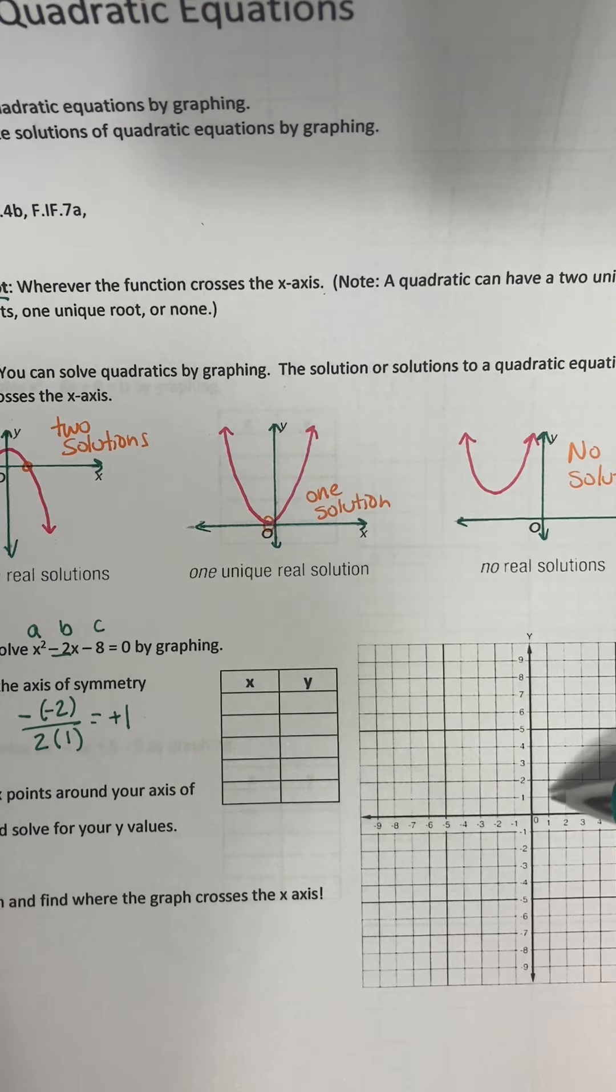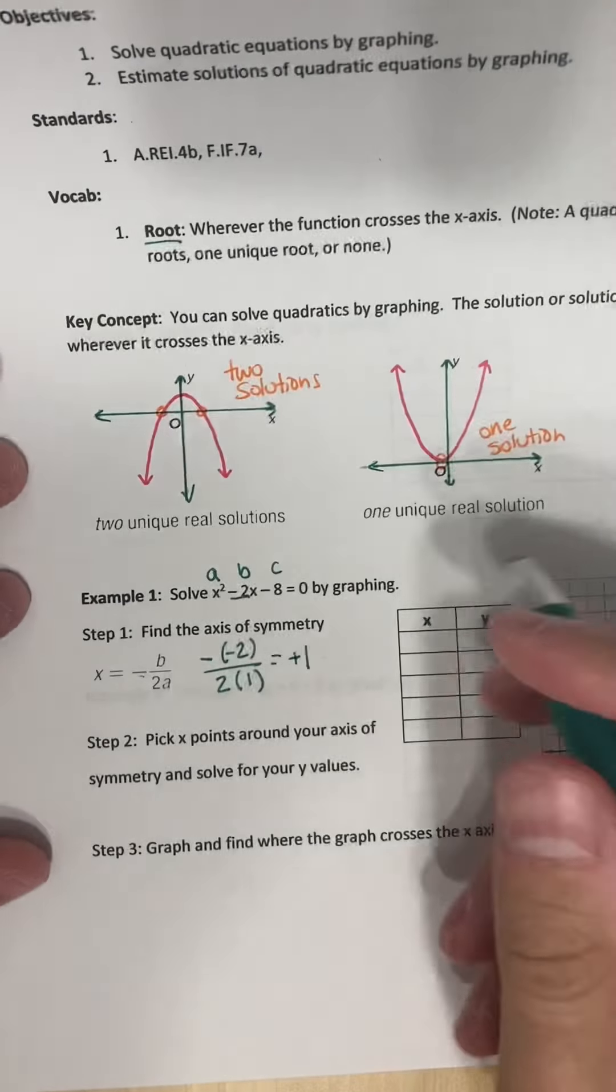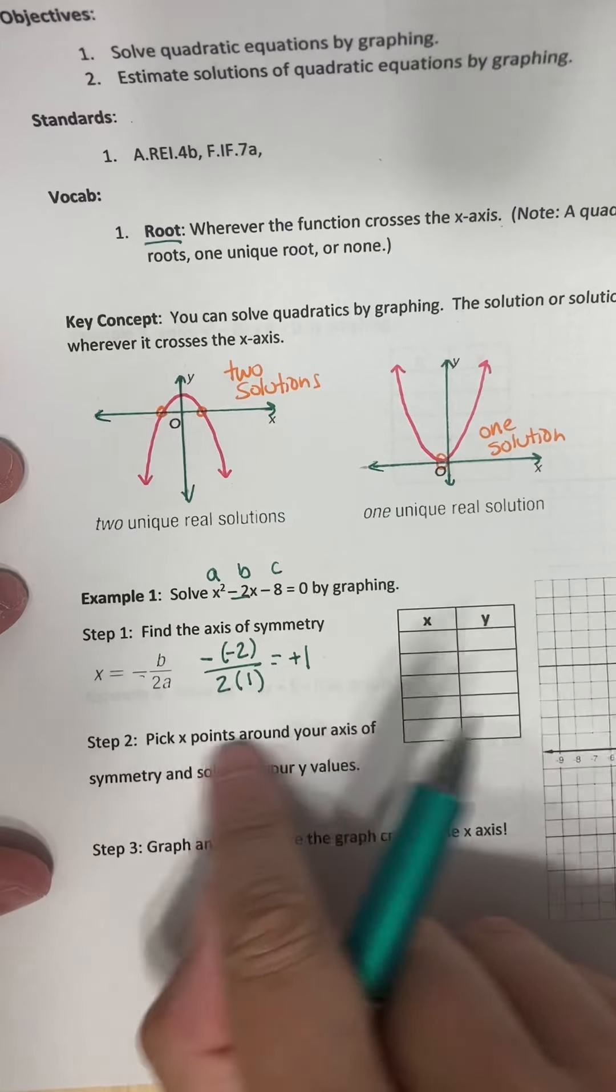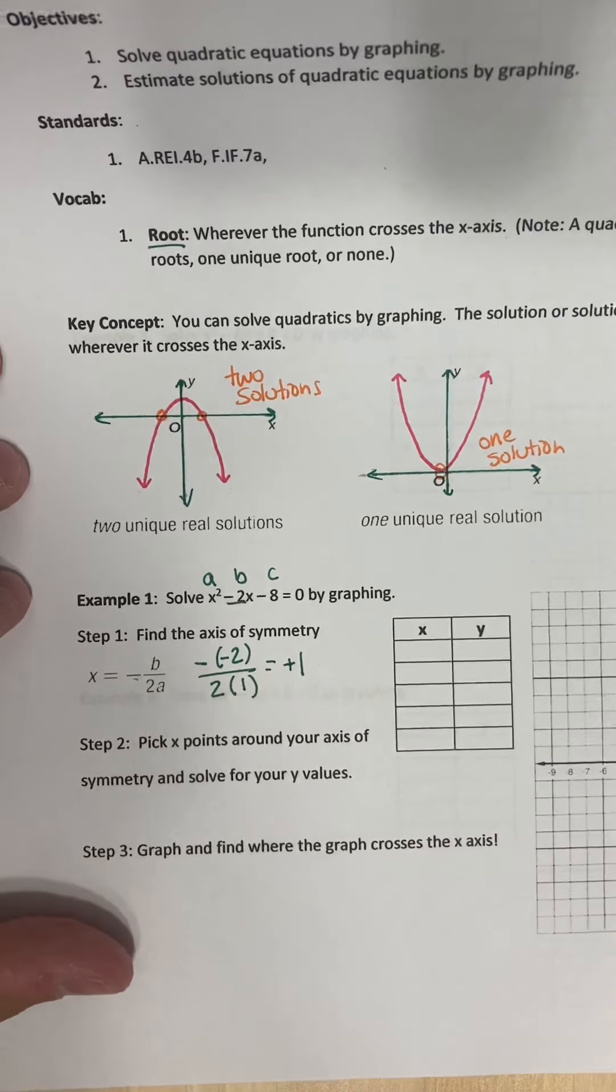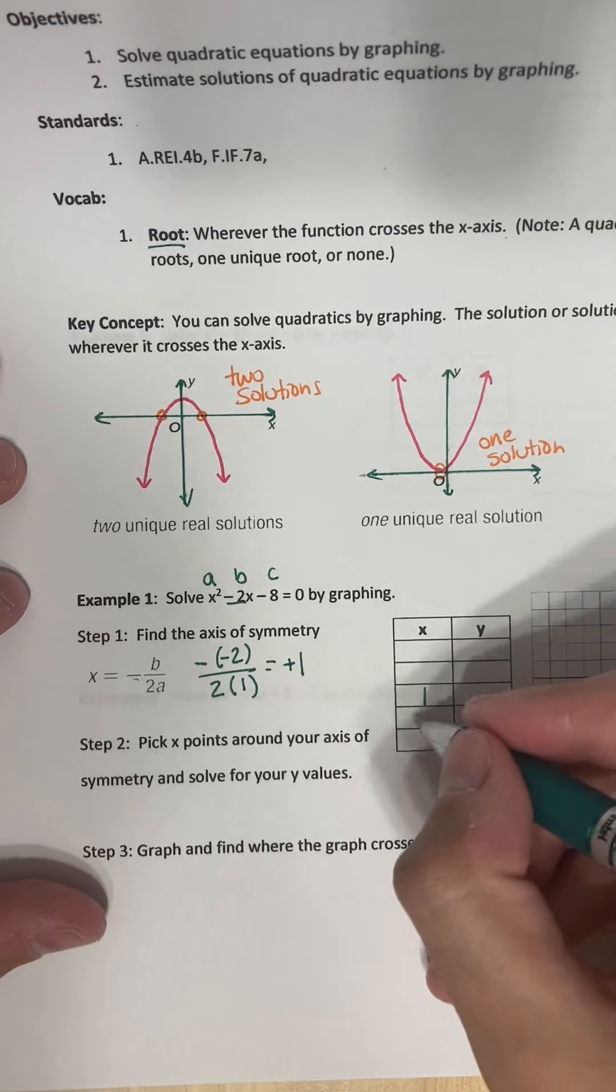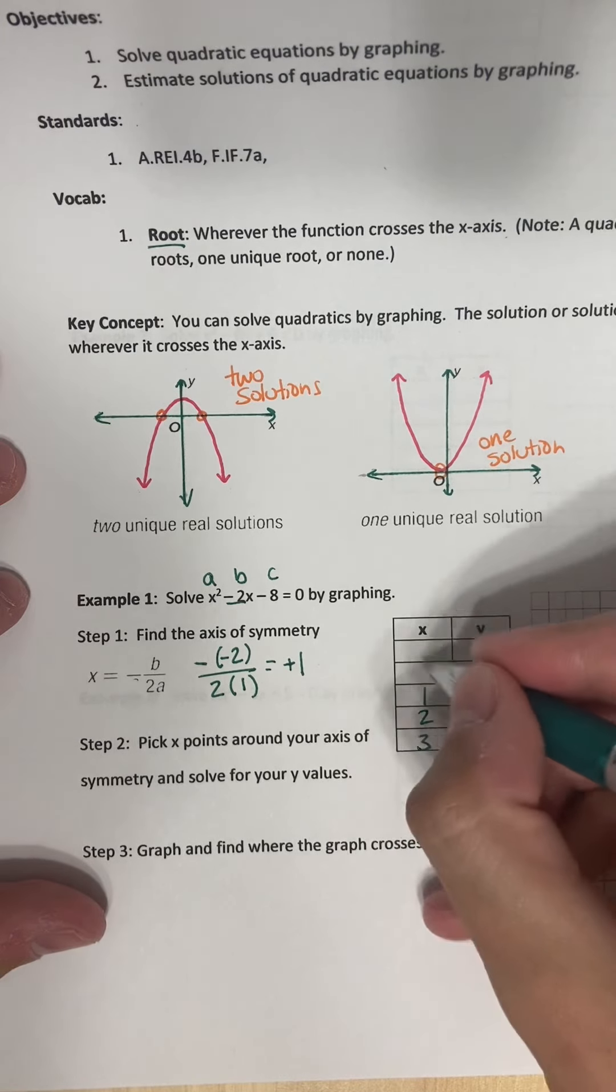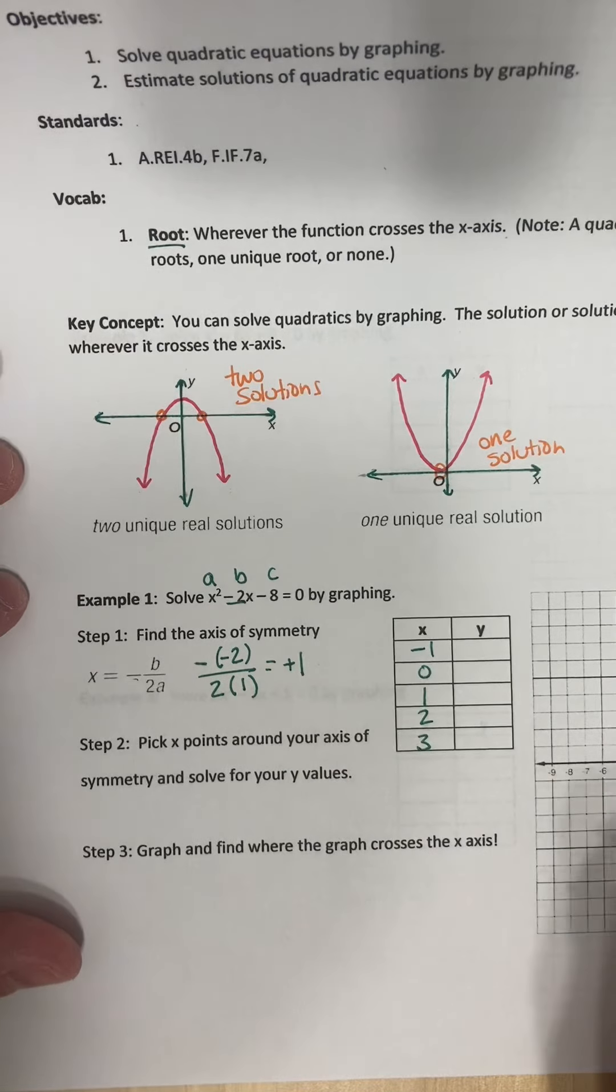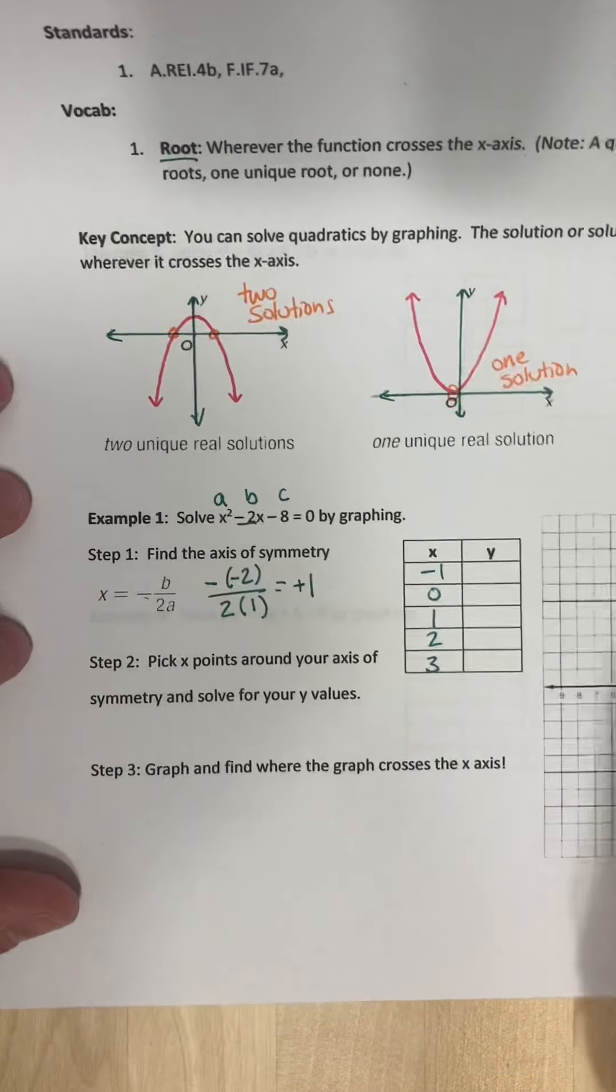So we know that our parabola is going to follow this. This is the line, this is the axis of symmetry. So let's pick some points around that and see if we can't plot this thing. So I'm going to put 1 right here in the middle, and then let's try 2, 3, 0, and negative 1.